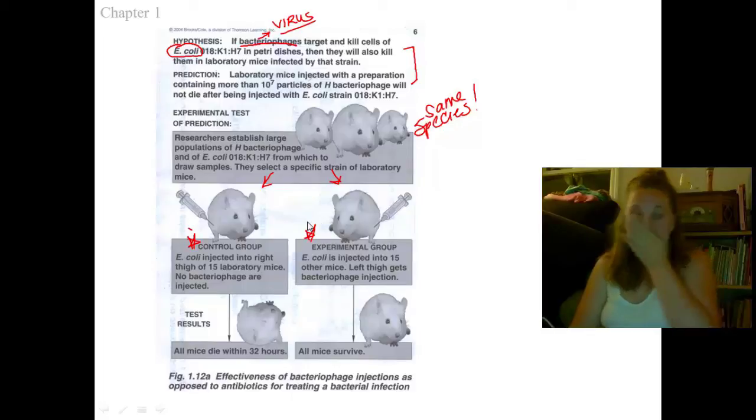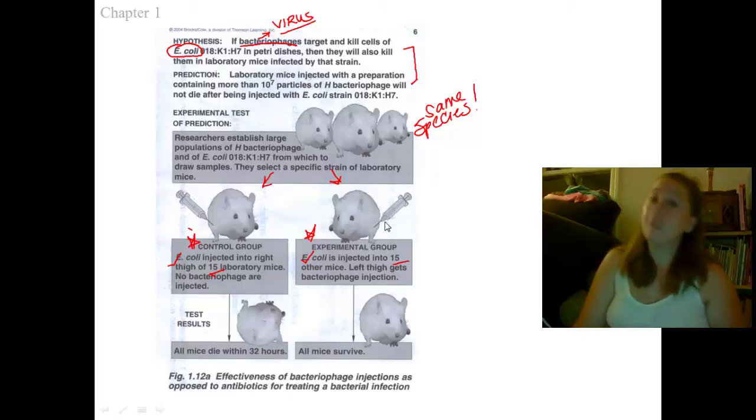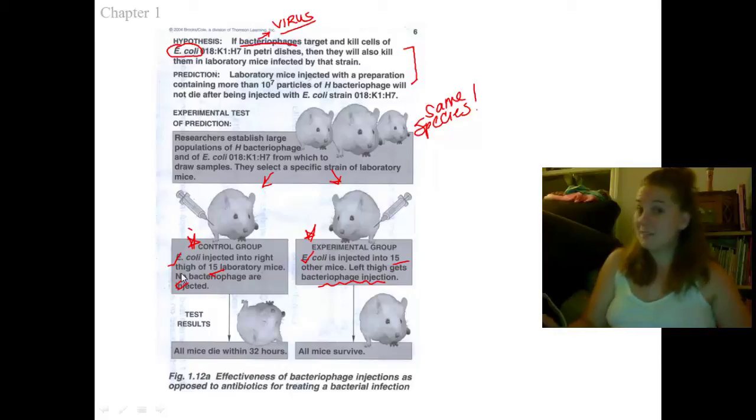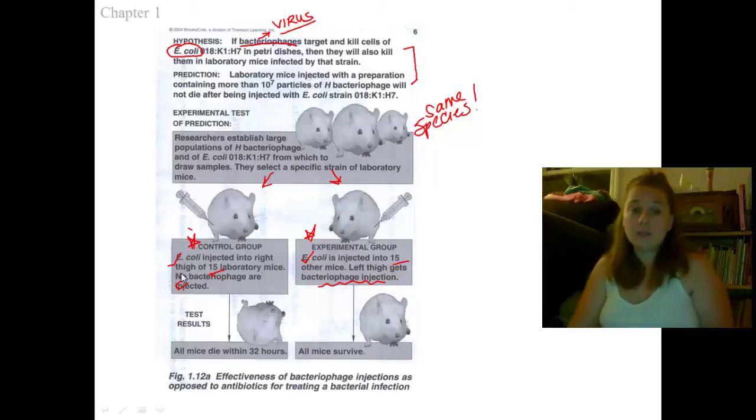Now our control group is going to be a group of 15 mice. Our experimental group, 15 mice. Note the numbers are the same. We're going to inject into the right thigh of these mice E. coli. Into my experimental group, I'm going to inject E. coli into the right thigh of the mouse. I'm going to make sure they get the same amount of food. I'm going to make sure that they have the same living environments. Everything's going to be the same for these mice. But I'm going to take for these mice, into their left thigh, I am going to inject the virus, where these guys get no injection. Then we let time do its thing and we find out what happens.